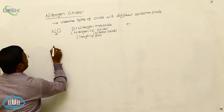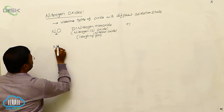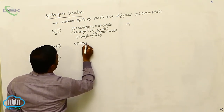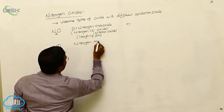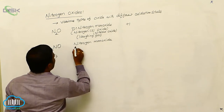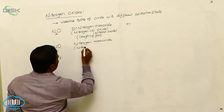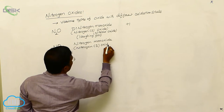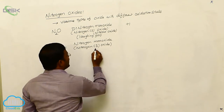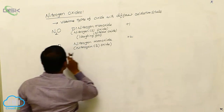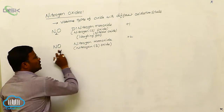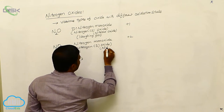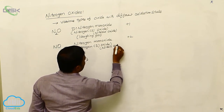Similarly, one more nitrogen oxide is NO. It is called nitrogen monoxide, also called nitrogen(II) oxide. The Roman numeral II indicates that the oxidation state of nitrogen in nitrogen monoxide is +2. It is also called nitric oxide.